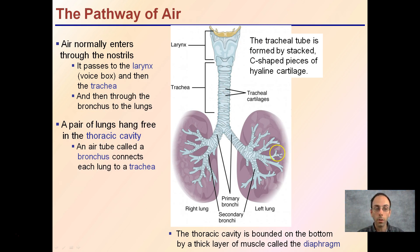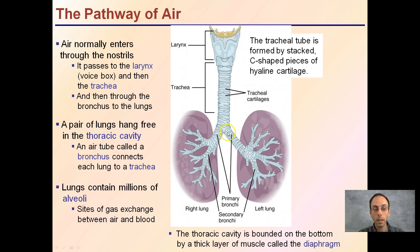The lungs hang free in the thoracic cavity. An air tube called the bronchus connects each lung to the trachea. The lungs contain millions of alveoli, because this is the actual site of gas exchange between the air and our blood. This thoracic cavity is bounded at the bottom by a thick layer of muscle called the diaphragm, which is located down here and will move to allow air to come into the lungs and also exit.